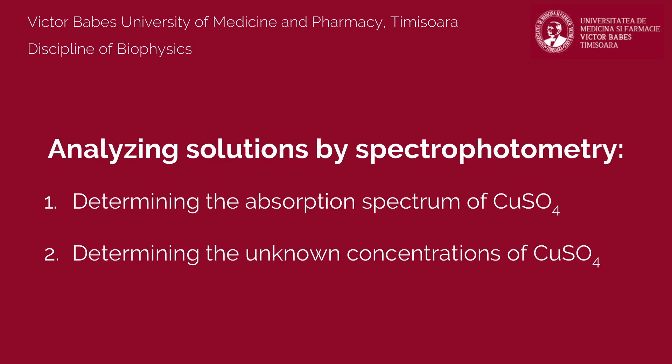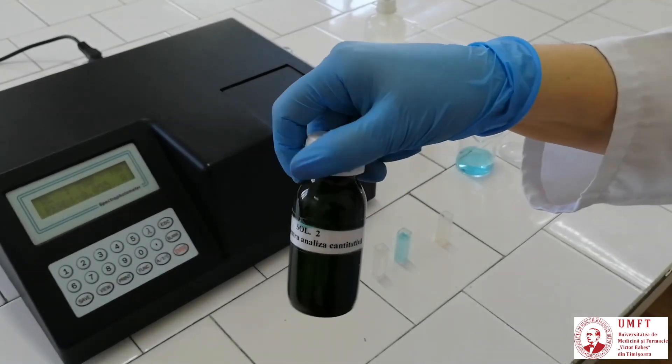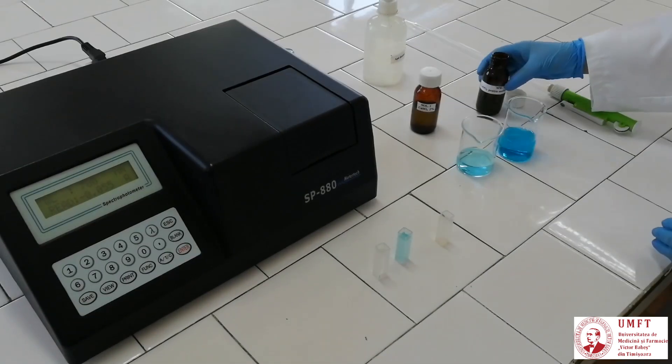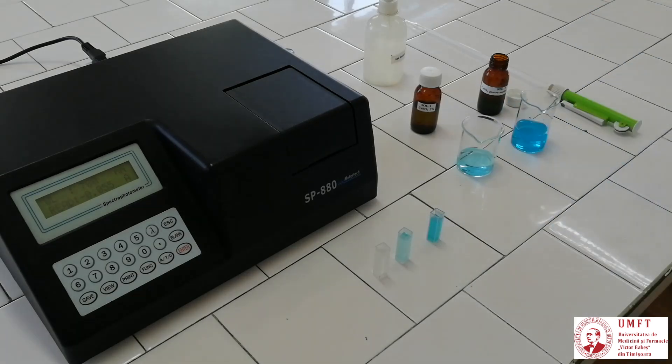In the second part of the experiment, using the spectrophotometer, you will determine the unknown concentration of a copper sulfate solution. For this, you will use distilled water and the 2% copper sulfate solution as reference. Fill another cuvette with the stock solution of unknown concentration. Set the wavelength for which the copper sulfate absorbance is maximum. Since absorbance is directly proportional to the concentration of a solution, even a slight change in concentration will visibly change its absorbance. The concentration variation can be more difficult or impossible to observe at wavelengths where the absorbance is low.